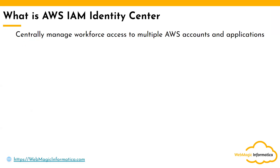To solve this, AWS has a service known as AWS IAM Identity Center, which simply lets you manage workforce access to multiple AWS accounts and applications. It's not limited to AWS accounts — you can also integrate your applications to it. If you want to compare it with a famous service, it's similar to Azure Active Directory where you can add multiple Microsoft services such as Azure subscriptions and Microsoft 365, and your users can get a single sign-on experience.